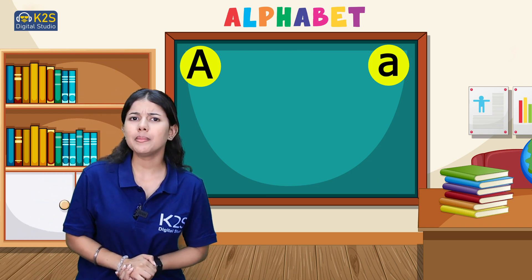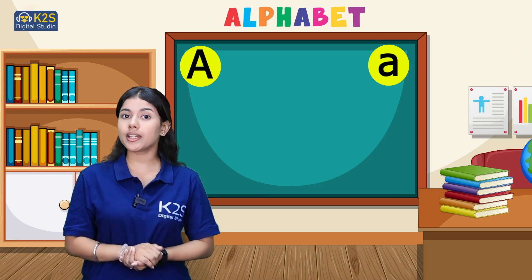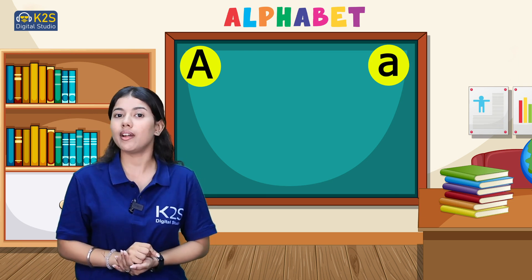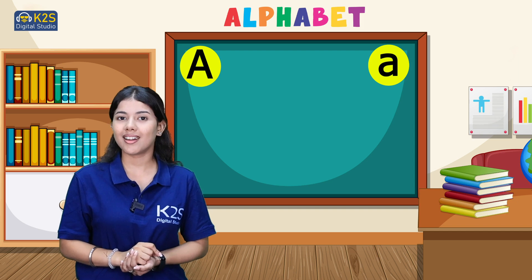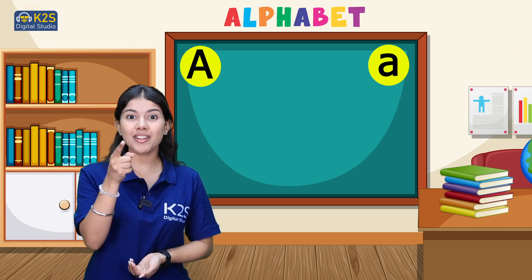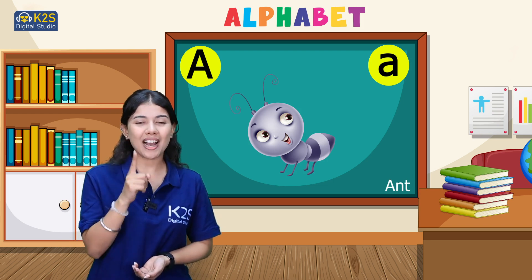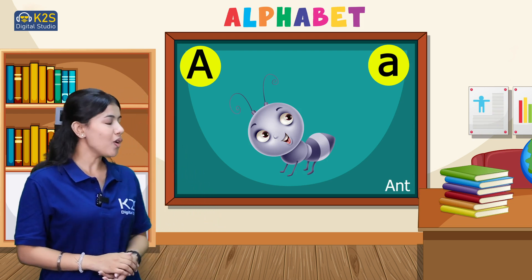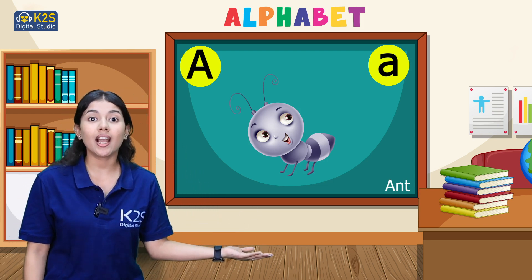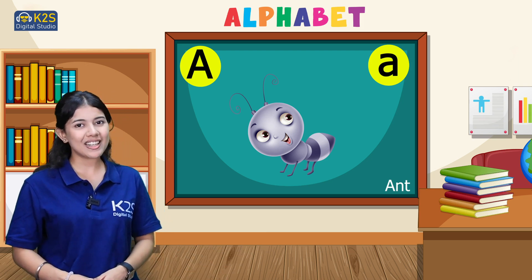Can you tell me an insect which starts with letter A? A very tiny one. Someone has guessed, right? Ant! Correct. So ant starts with letter A. A for ant.